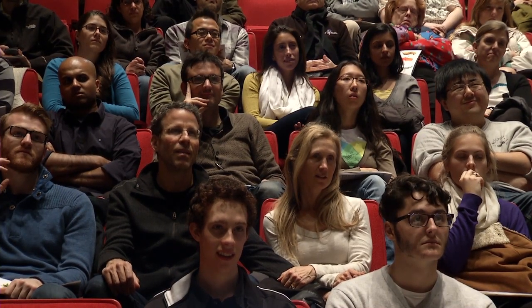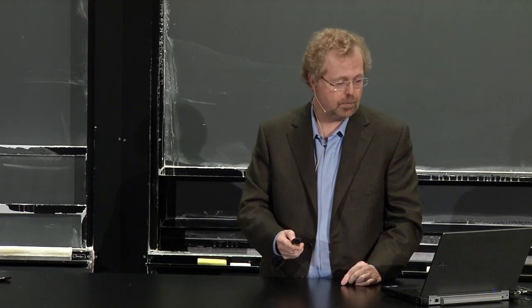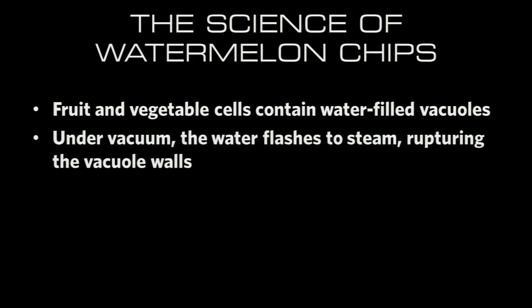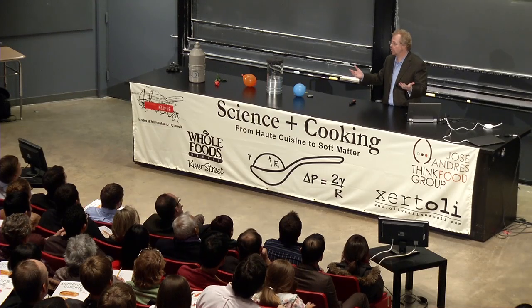I got on the kick of making a chip out of anything and hit on watermelon. Watermelon is inauspicious for chip-making unless you give it enough starch. Fruit and vegetables are filled with vacuoles that have water in them—they're actually quite porous. An apple is 50% air, which is why they float in bobbing for apples. If you put them in a vacuum, you can rupture the vacuole walls and infuse something else into them.